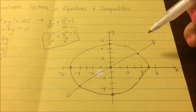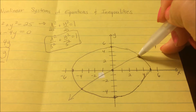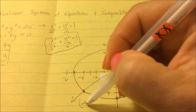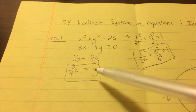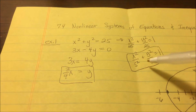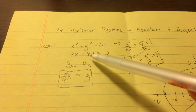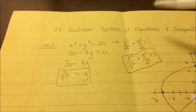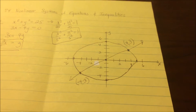Wherever the two graphs intersect is a solution — just like the graphing method from systems of equations. So we get solutions at (4, 3) and (-4, -3). You could also substitute y equals 3/4 x back into the first equation, squaring it out and solving for x, rather than just using the graphing method.